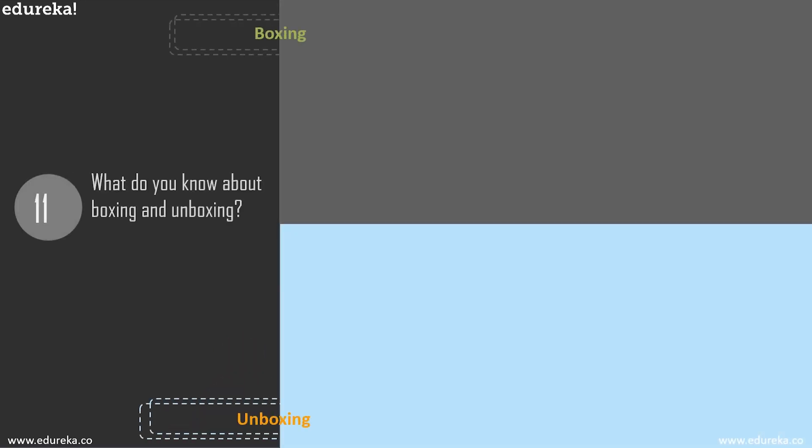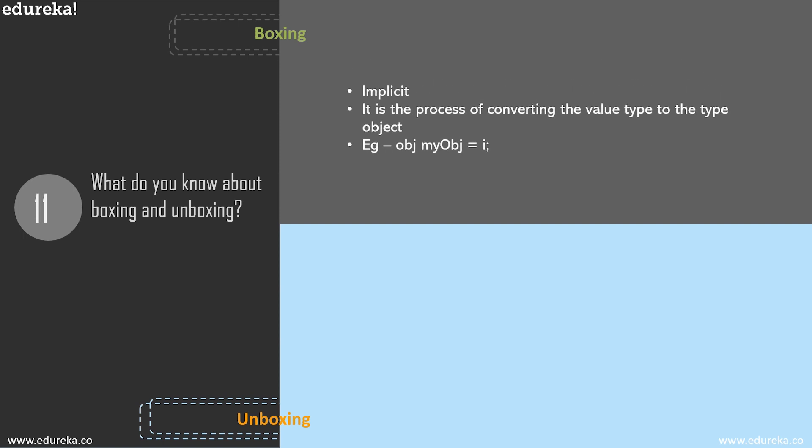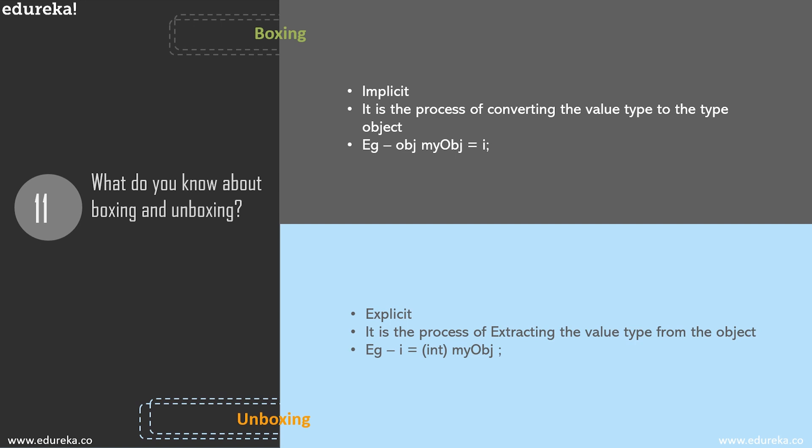Question 11: what do you know about boxing and unboxing? Boxing is converting a value type to an object type — the value type is stored on the stack and the object type is stored in heap memory. This is an implicit conversion; you can directly assign a value to an object and C# handles the rest. Unboxing is the reverse: converting object type back to value type, transferring value from the heap to the stack. Unlike boxing, unboxing must be done explicitly and the value type must match what the object type refers to.